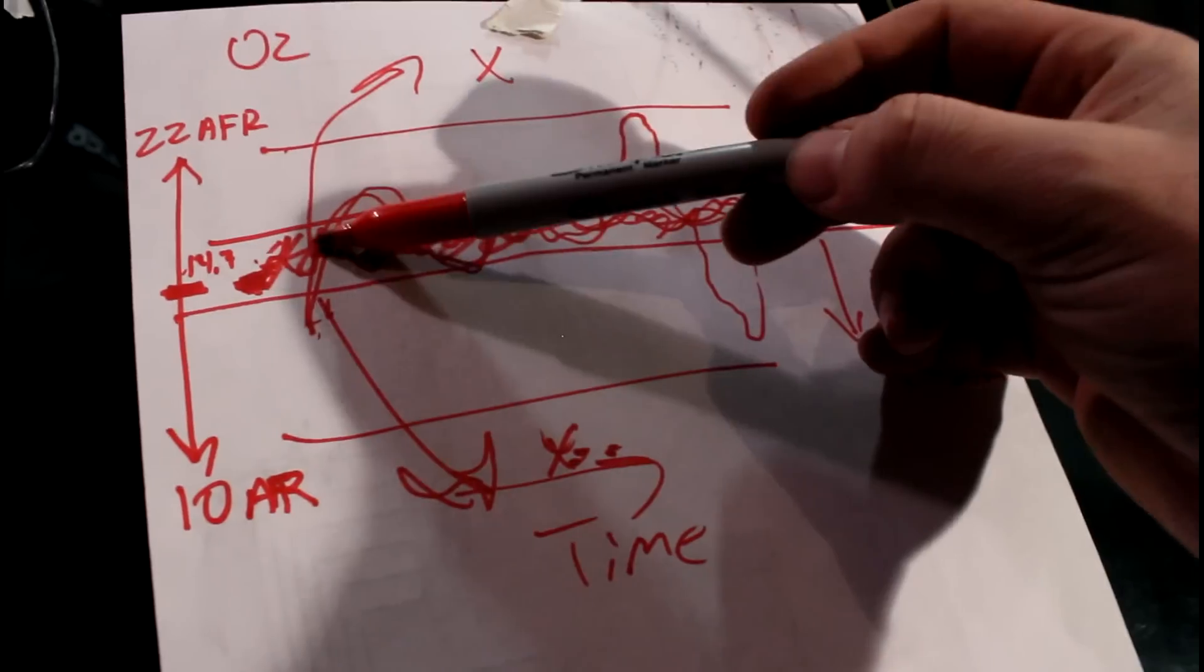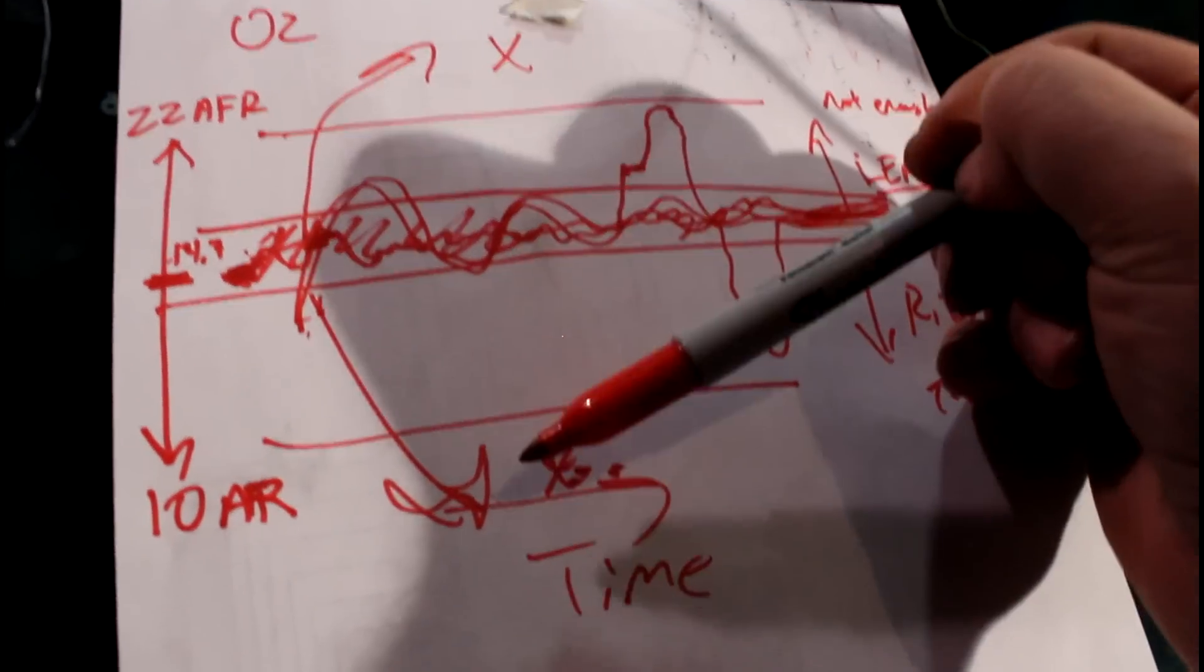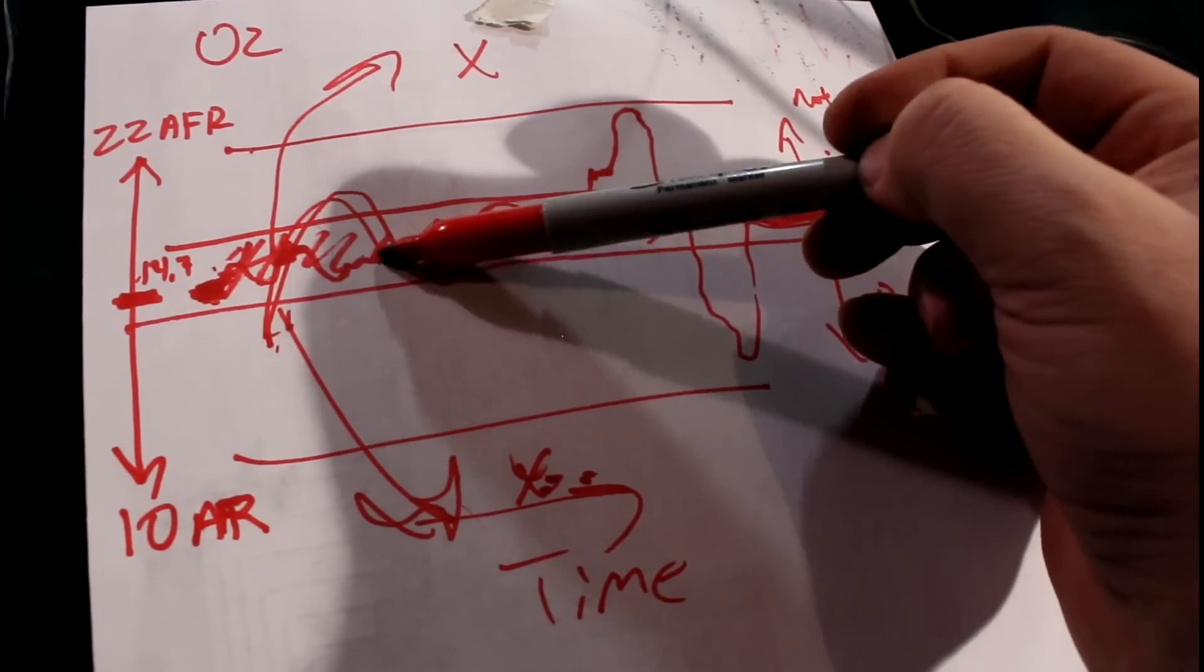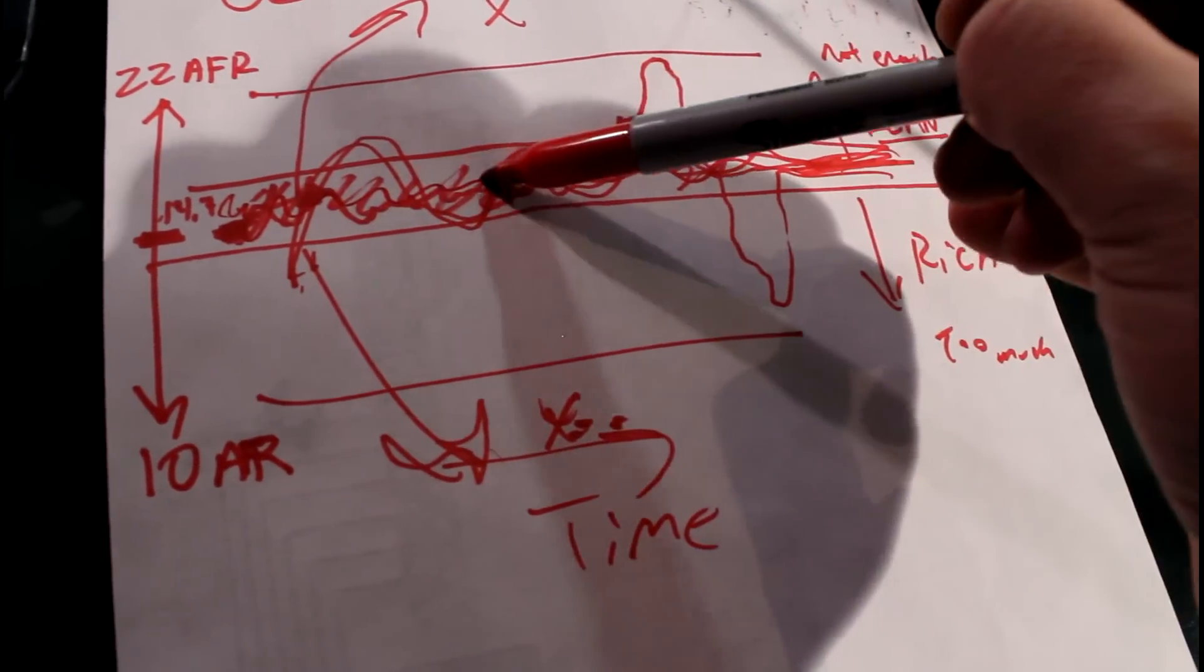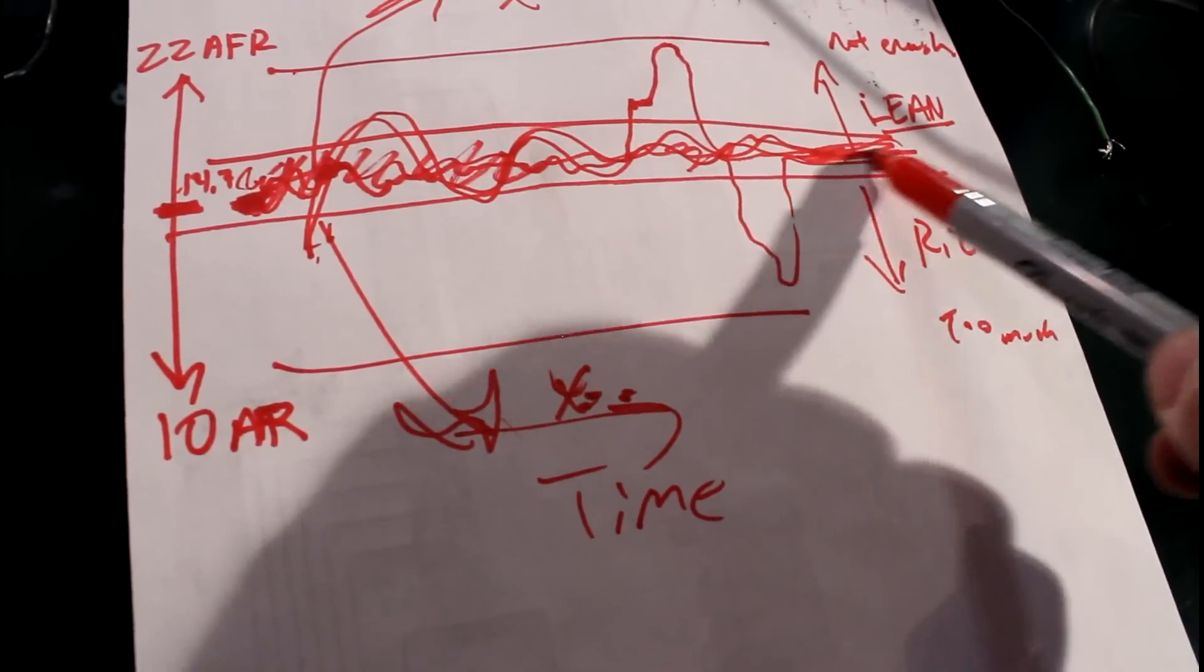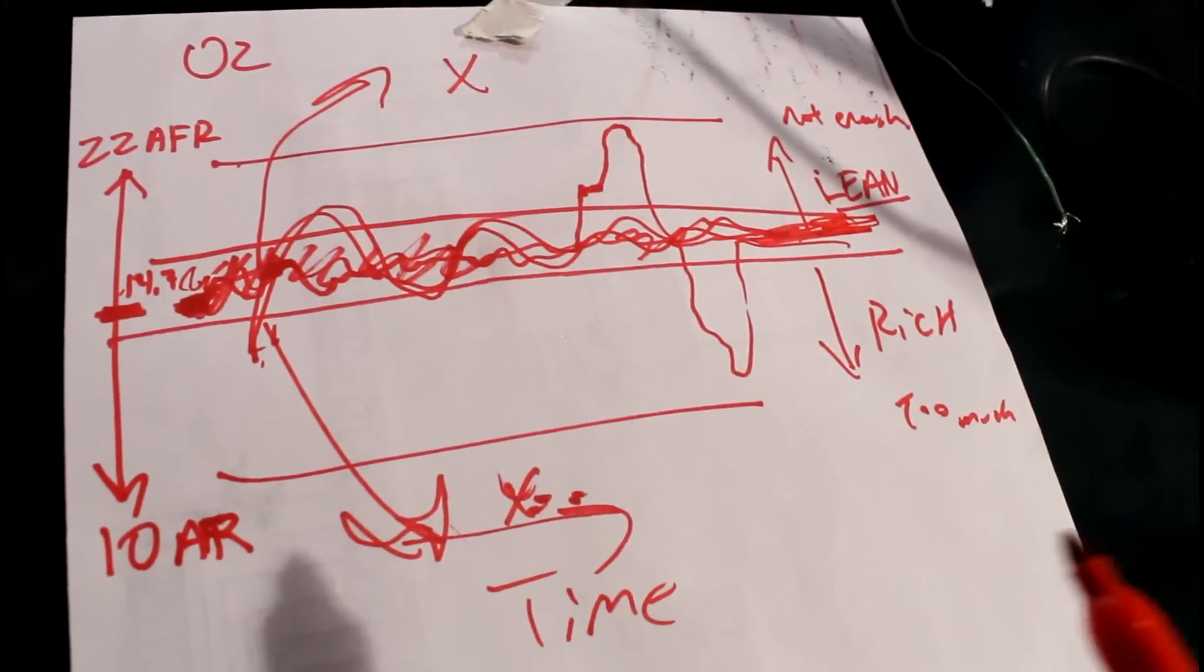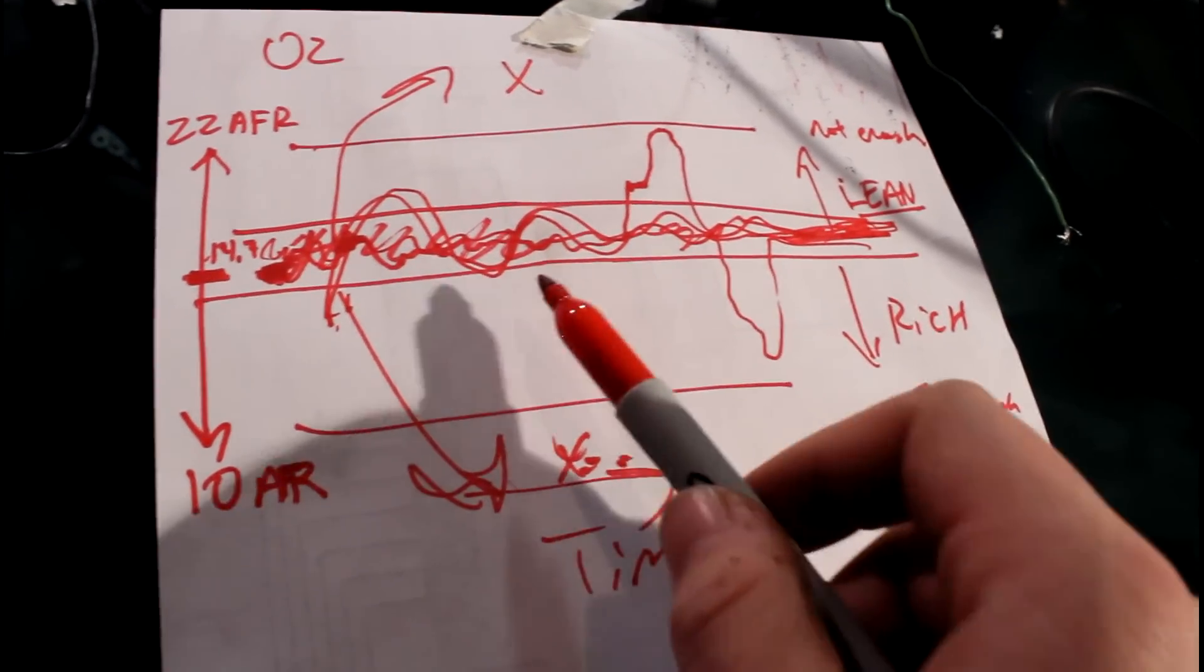But basically they're using this kind of poor sensor response where it's swinging wildly across this narrow band of response here. And they kind of play games with it. The MegaSquirt will do that same thing I believe and try to get you down to 14.7.